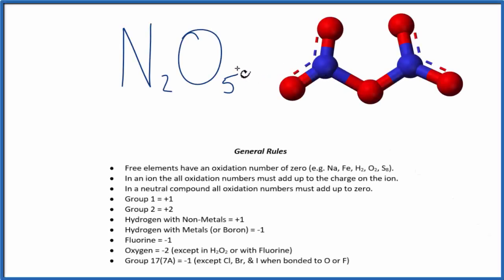In this video, we'll find the oxidation numbers for each element here in N2O5, dinitrogen pentoxide. So the red, those are the oxygens, and the blue, purple, that's the nitrogen.